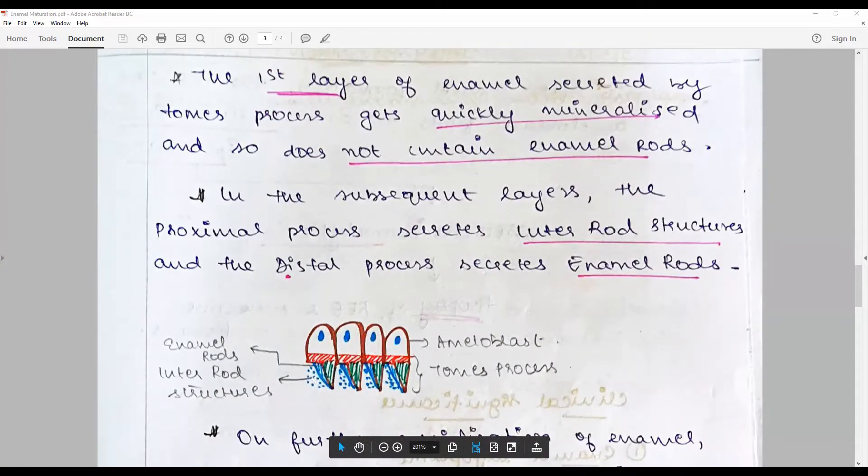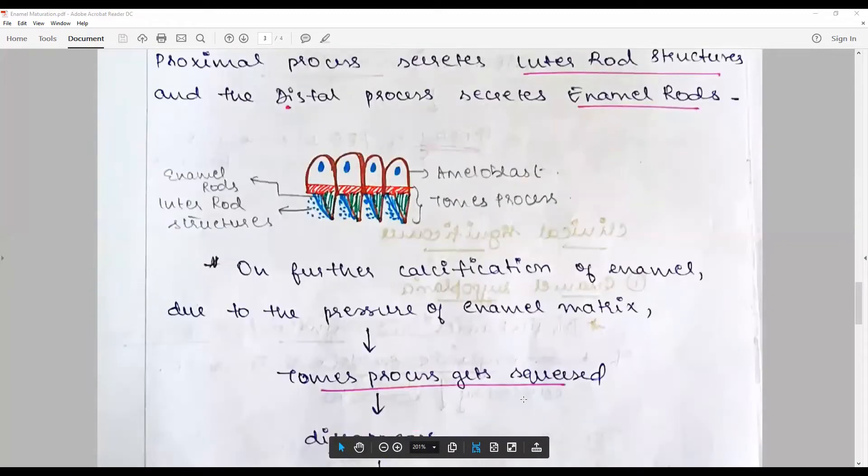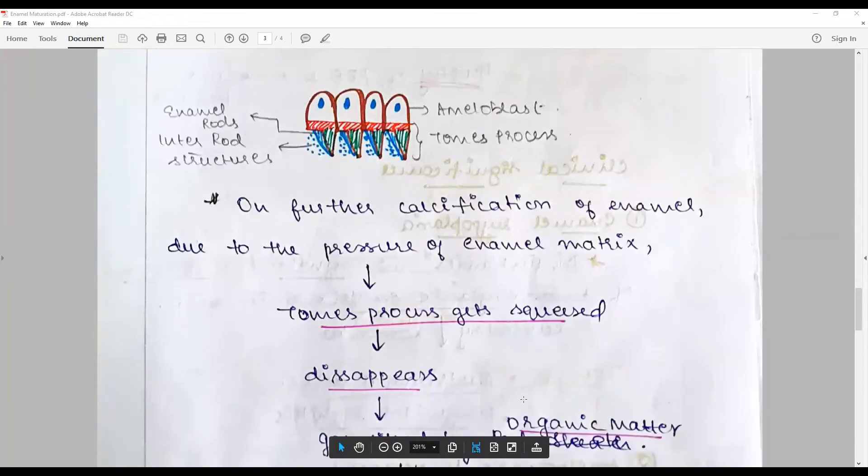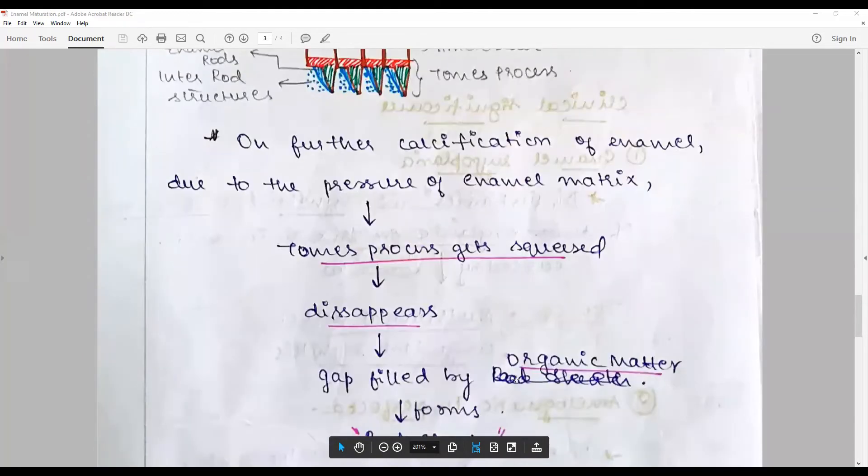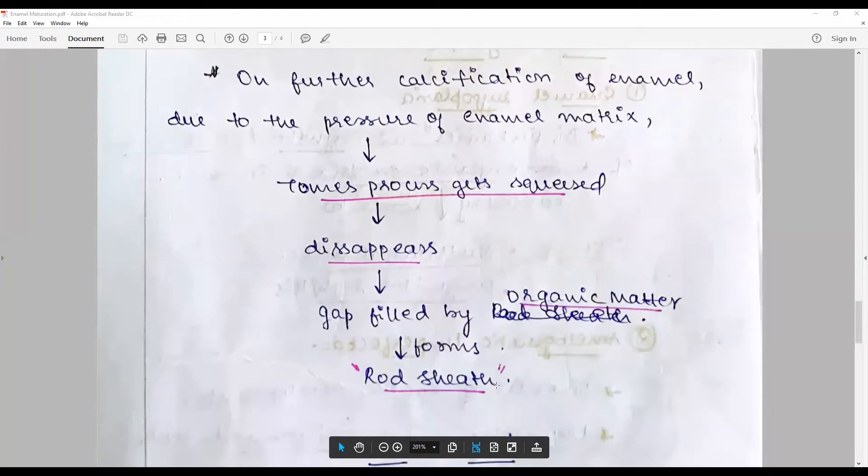The blue shows the enamel rods whereas the outer dot shows the inter-rod structures or inter-rod prismatic substances. Further calcification of enamel, due to the pressure of the newly formed enamel matrix, causes Tomes process to get squeezed. It becomes rod-like and disappears, and this gap is filled by subsequent organic matter, which is what we see in the final enamel as rod sheath.